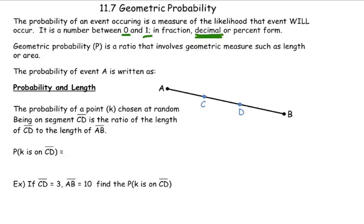The Geometric Probability, P, that's how you see it referred to, capital P, is a ratio that involves a geometric measure, such as the length or the area.